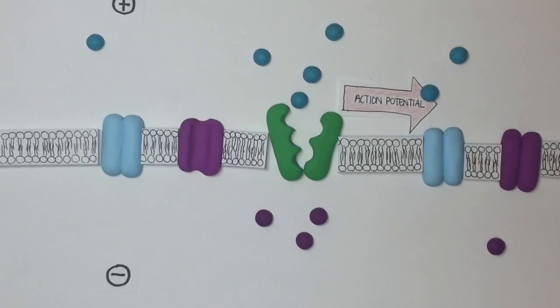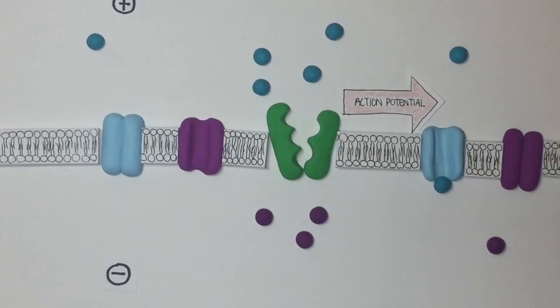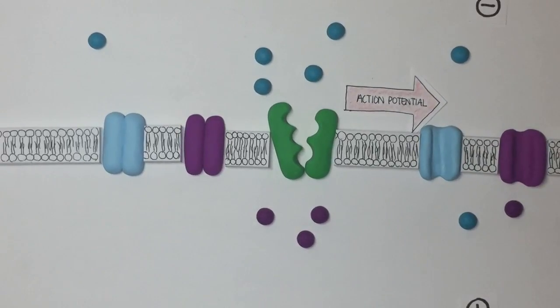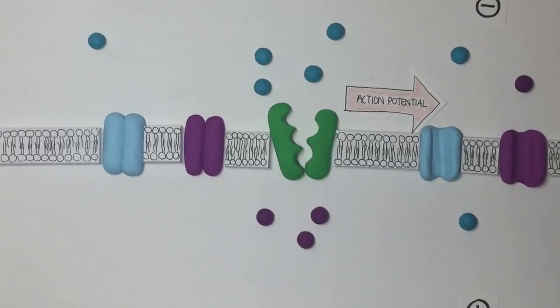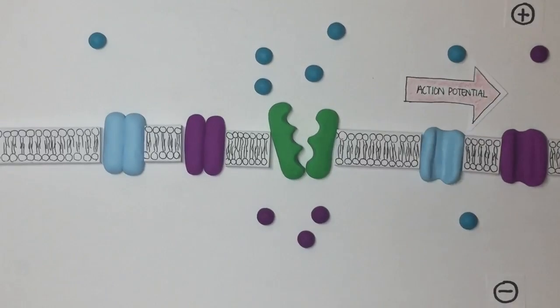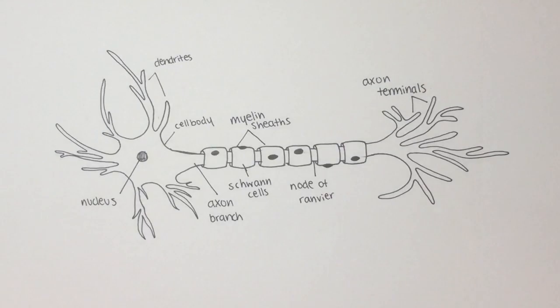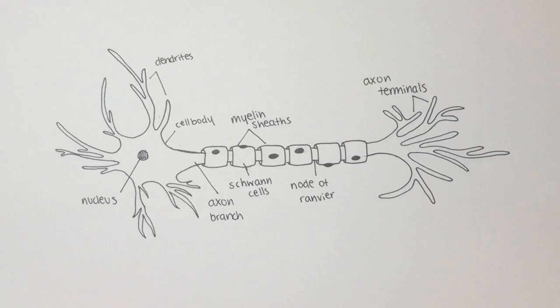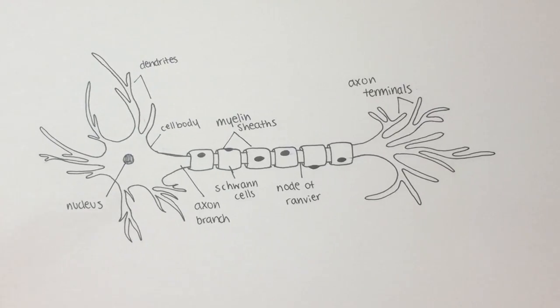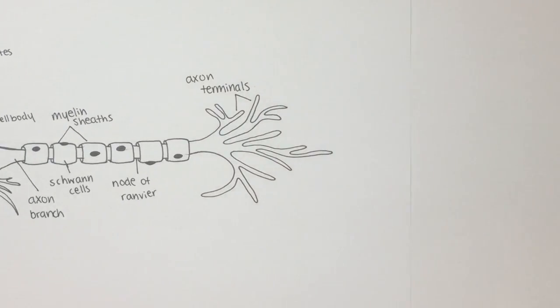This process will then continue to repeat itself down the axon. Thus, the electrical message is being transported. Okay, now that we know how a signal moves along a single neuron, let's take a look at what happens once it reaches the end of a neuron, or the axon terminal.